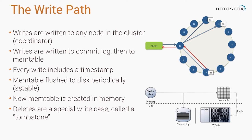The next thing Cassandra does is merge that mutation into an in-memory representation of your table called a memtable. Once it writes to the commit log and merges into the memtable, it can respond back to the coordinator or to the client and say, 'We wrote your data.'